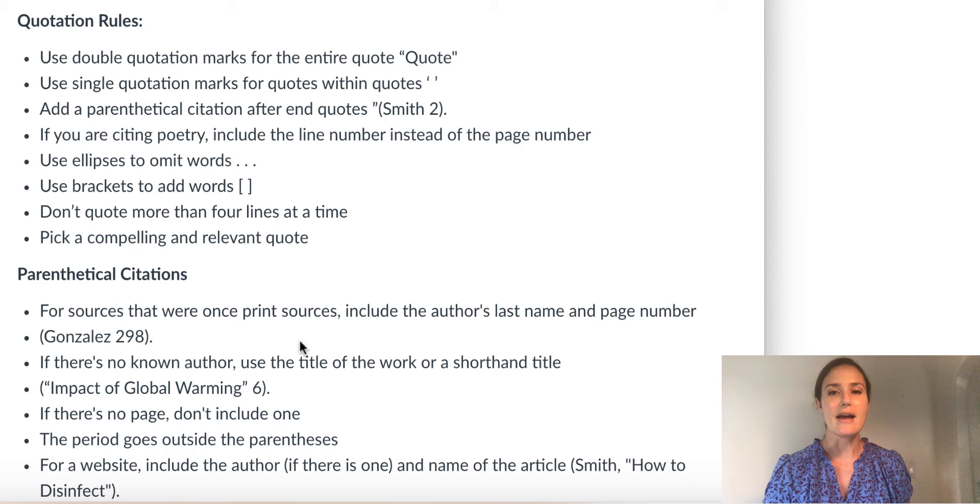Here are the big rules that you should know. Use double quotation marks for the entire quote. Use single quotation marks when you have a quote inside of another quote. This might happen if you're quoting from a short story or a novel, where you're quoting the story, but you're also quoting what a character said in the story. Maybe you're writing about The Handmaid's Tale, so you're quoting Margaret Atwood, but you're also quoting what a character offered said, so you have to use double quotes for the entire quote, but single quotes when you have a character speaking.